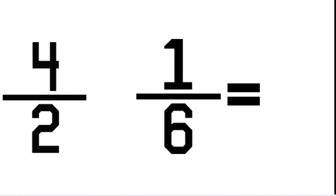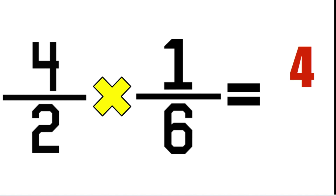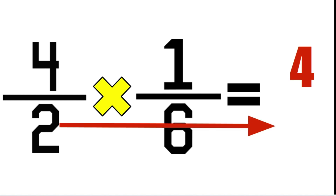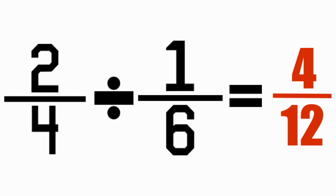We're going to multiply instead of divide. What we're going to do now is multiply our top row, or our numerators, together straight across the top. Four times one is four. We're going to do our bottom row — two times six is twelve. And this gives you a new fraction which is the answer to your division problem.